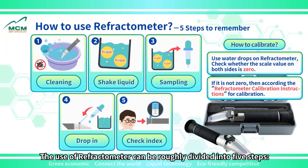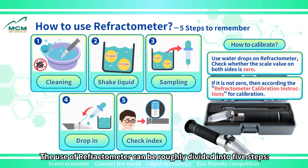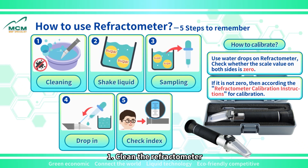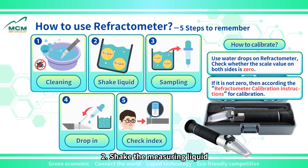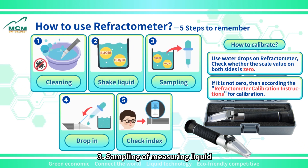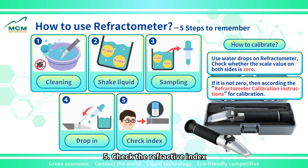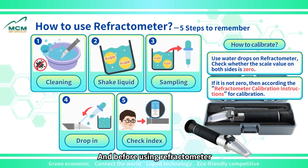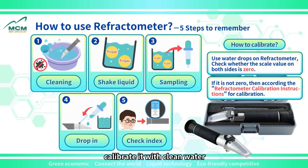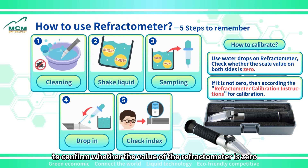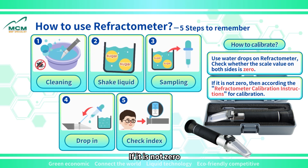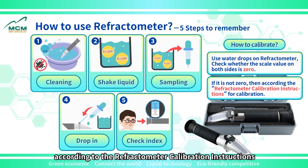The use of a refractometer can be roughly divided into five steps: one, clean the refractometer; two, shake the measuring liquid; three, sampling of measuring liquid; four, drop in the measuring liquid; five, check the refractive index. Before using the refractometer, calibrate it with clean water to confirm whether the value is zero. If it is not zero, it needs to be calibrated according to the refractometer calibration instructions.